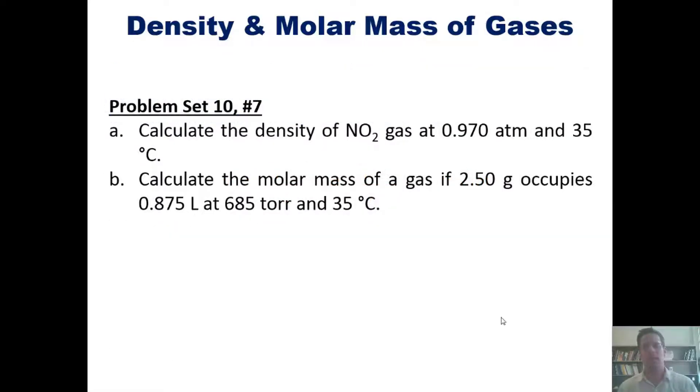Let's take a look at a problem: Calculate the density of NO₂ gas at 0.97 atm and 35 degrees Celsius, and calculate the molar mass of a gas if 2.5 grams of it occupies 0.875 liters at 685 torr and 35°C. I'm not doing this problem here, but you can click this link to watch the solution if you like.